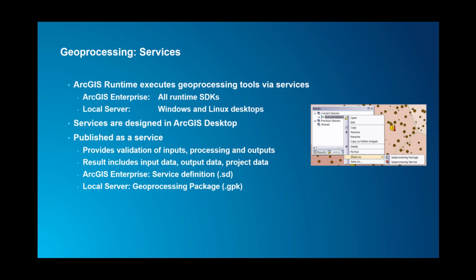The reason the result includes input, output, and project data is that it's all bundled into the service definition or geoprocessing package. When working with these models, choose a relatively constrained input data set for the tool run you want to publish — that will generate a relatively constrained output data set. Otherwise you'll end up with extremely large geoprocessing packages.